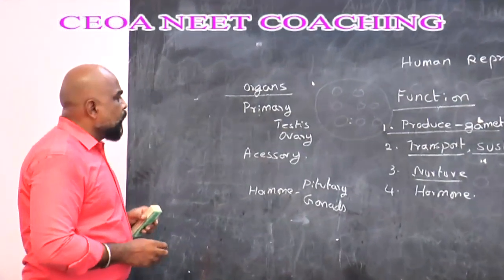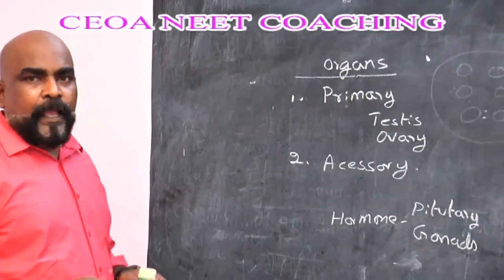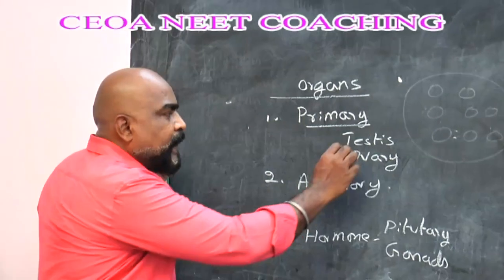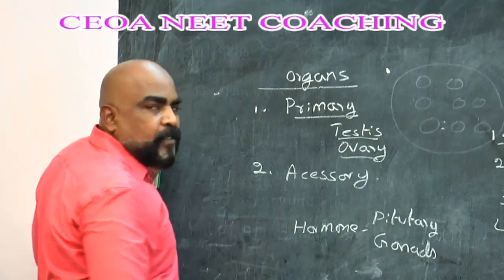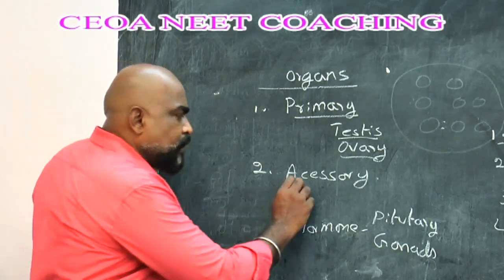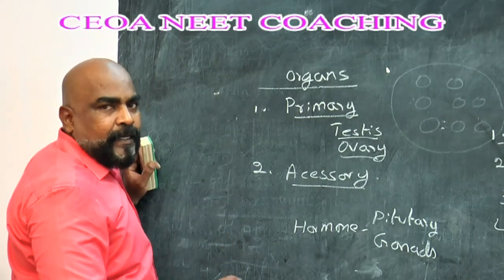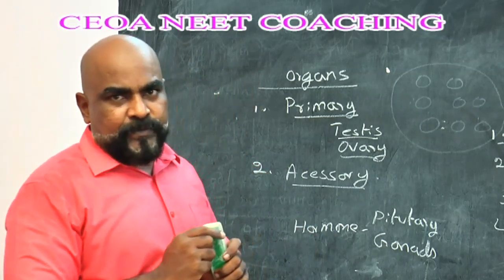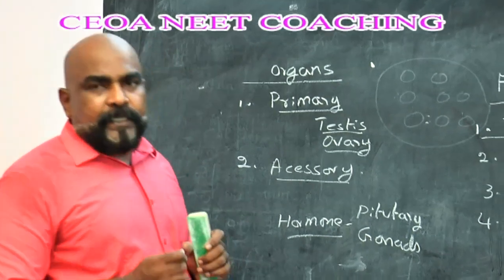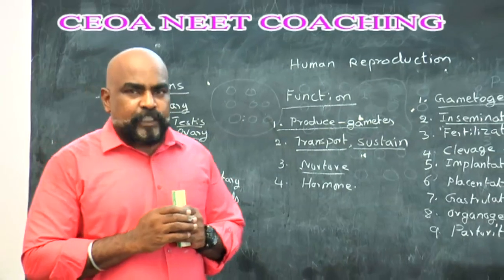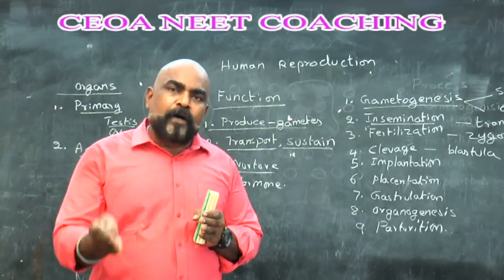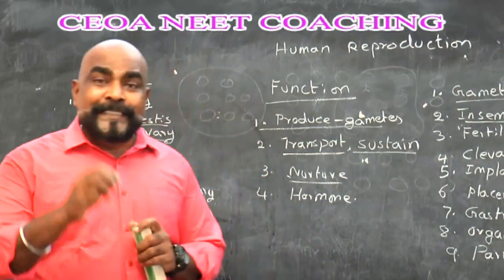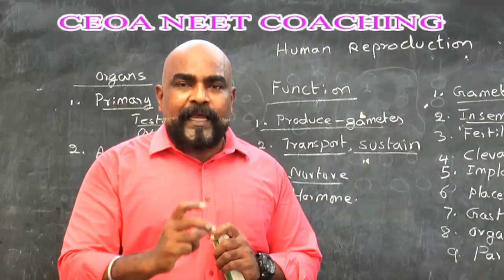Now let us see how the reproductive organs are classified. They are basically classified into primary and accessory organs. Primary organs' main function is to produce the gametes — in male it is the testis which produces spermatozoa, and in female it is the ovary which produces the egg. The accessory organs help in the transport and sustaining of the gametes, and reproduction is mainly regulated by hormones produced by the gonads.